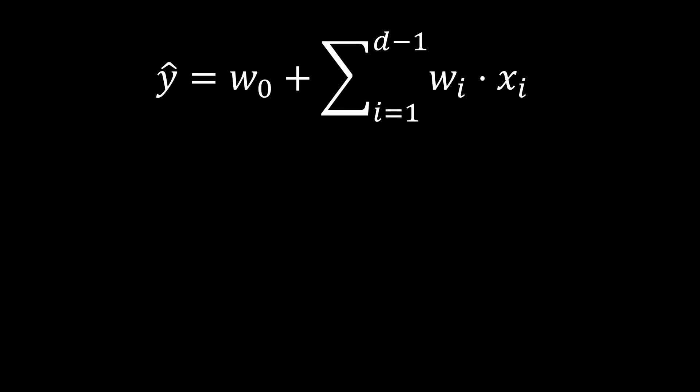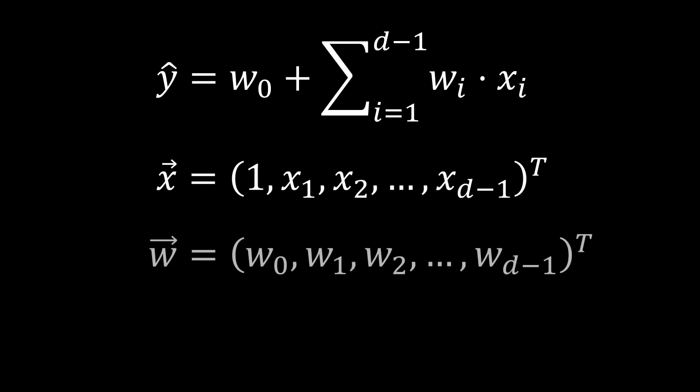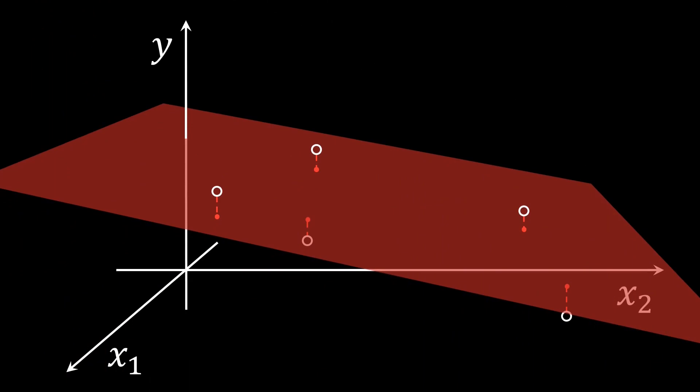If we model the inputs and weights as vectors, where we added an additional 1 to the X vector to account for the offset, this can be nicely written as a simple vector dot product. Here, the input vector X is what is commonly referred to as features, while the weight vector W gives the weights of the regression. Finding the best vector of weights given a set of N input vectors X is what is referred to as the linear regression problem. If we have two inputs X1 and X2, we can formulate this problem visually as finding the plane that best matches the points in the three-dimensional input output space. For higher dimensions, we are analogously looking for a hyperplane in the input-output space.